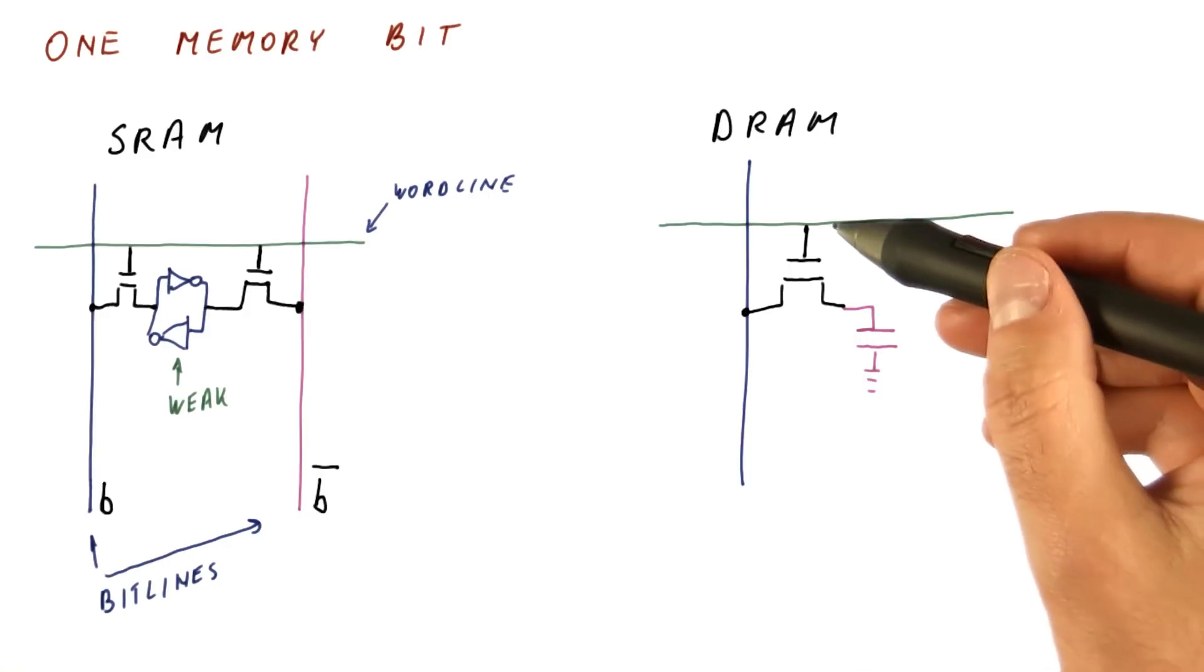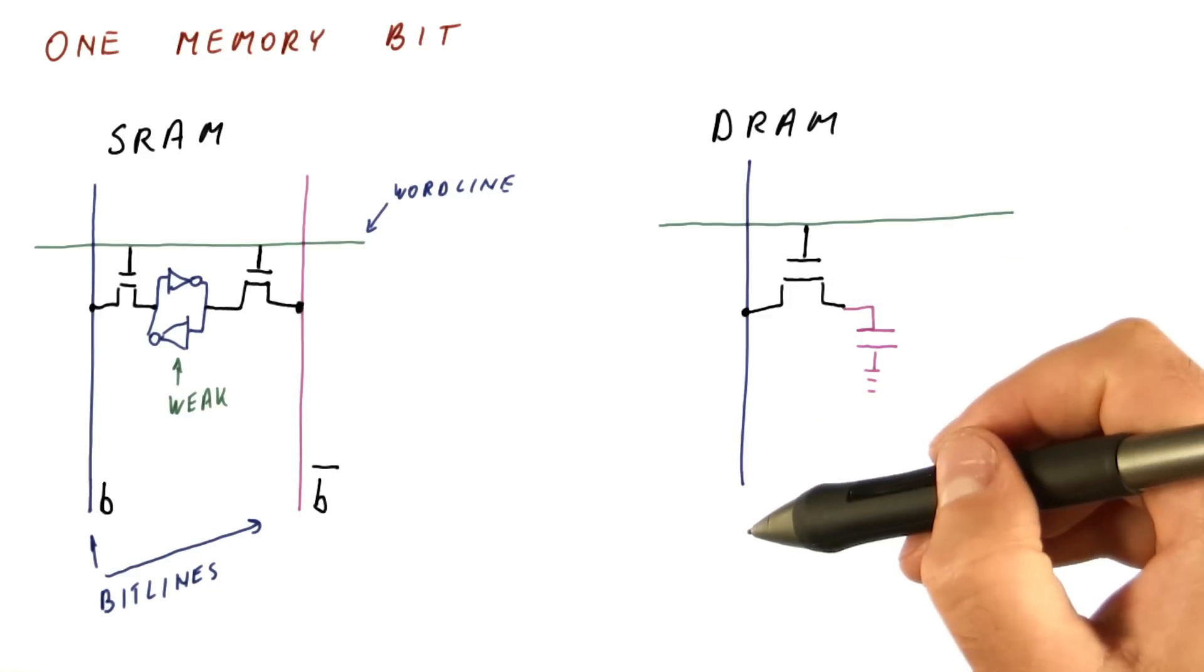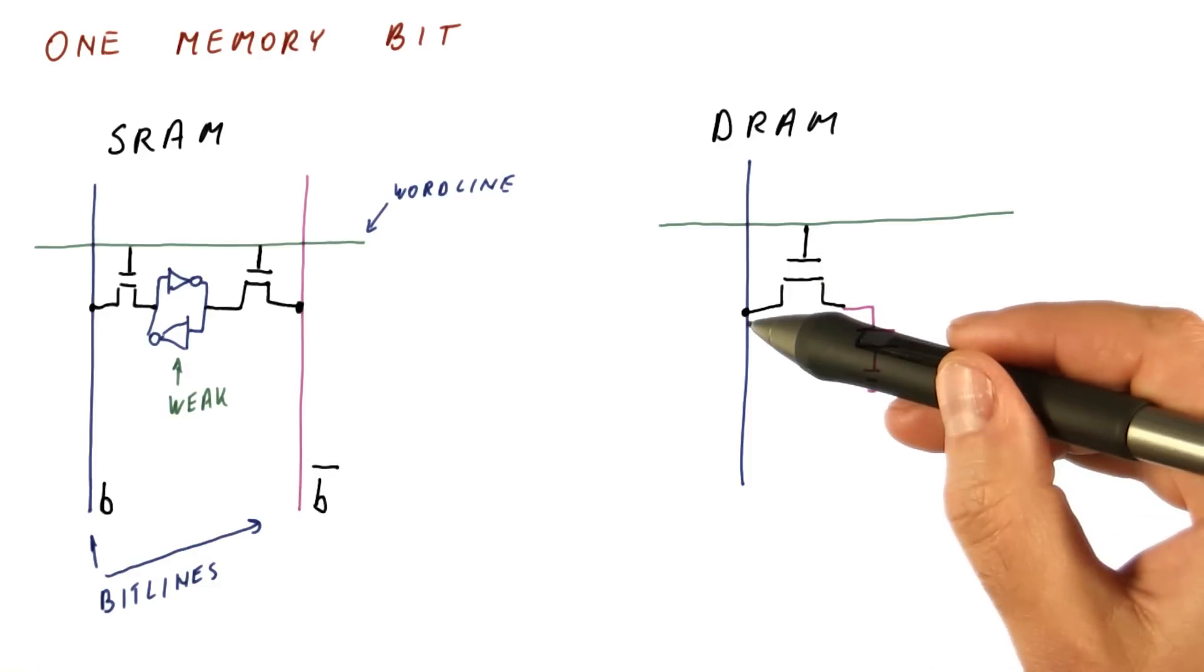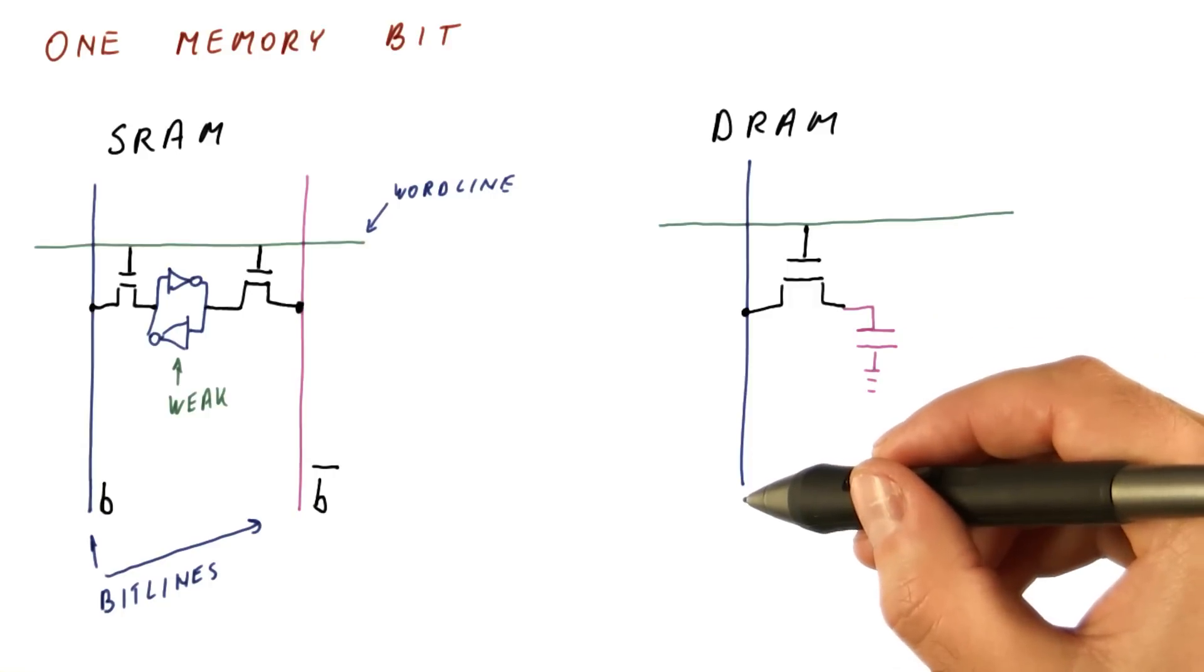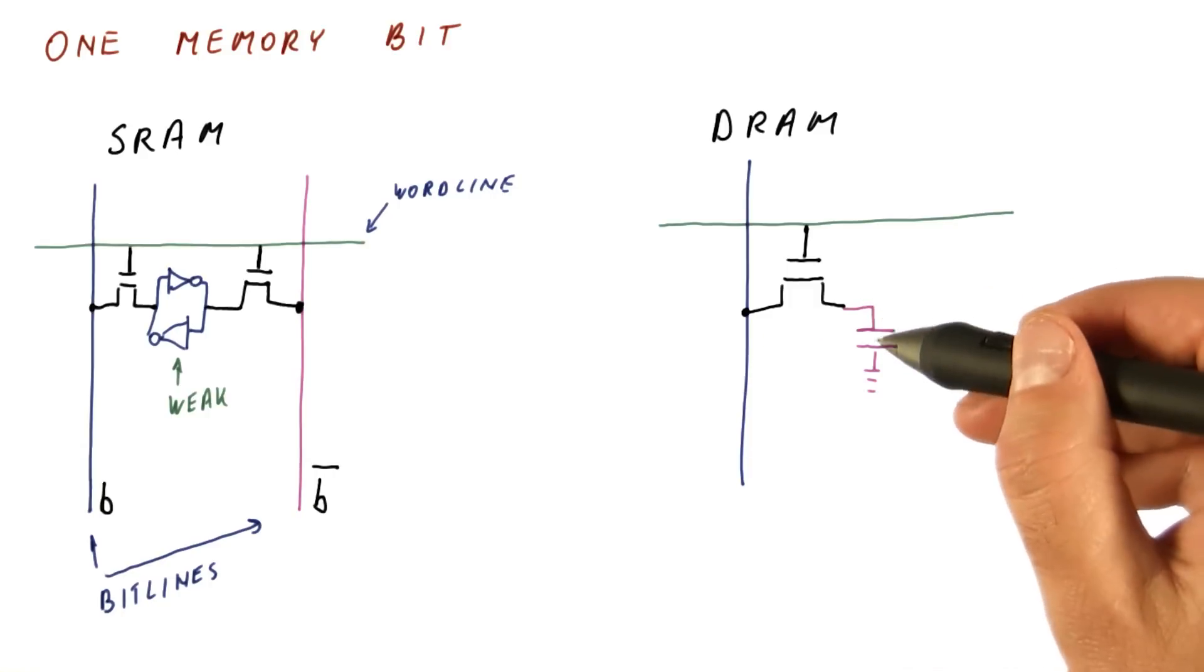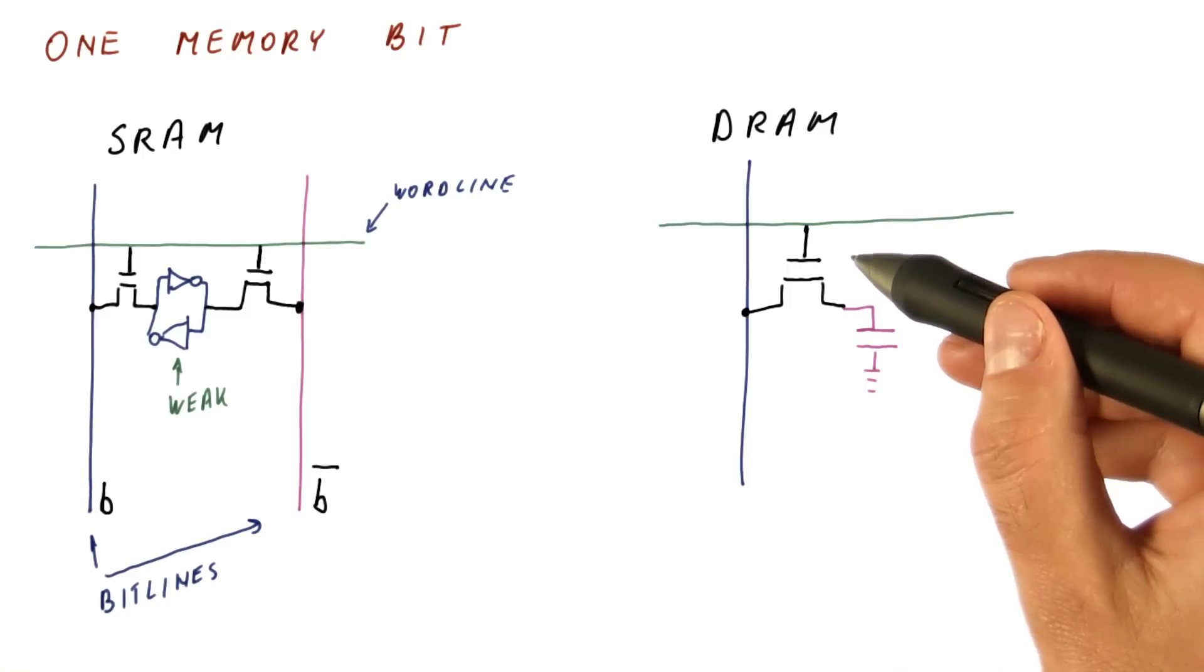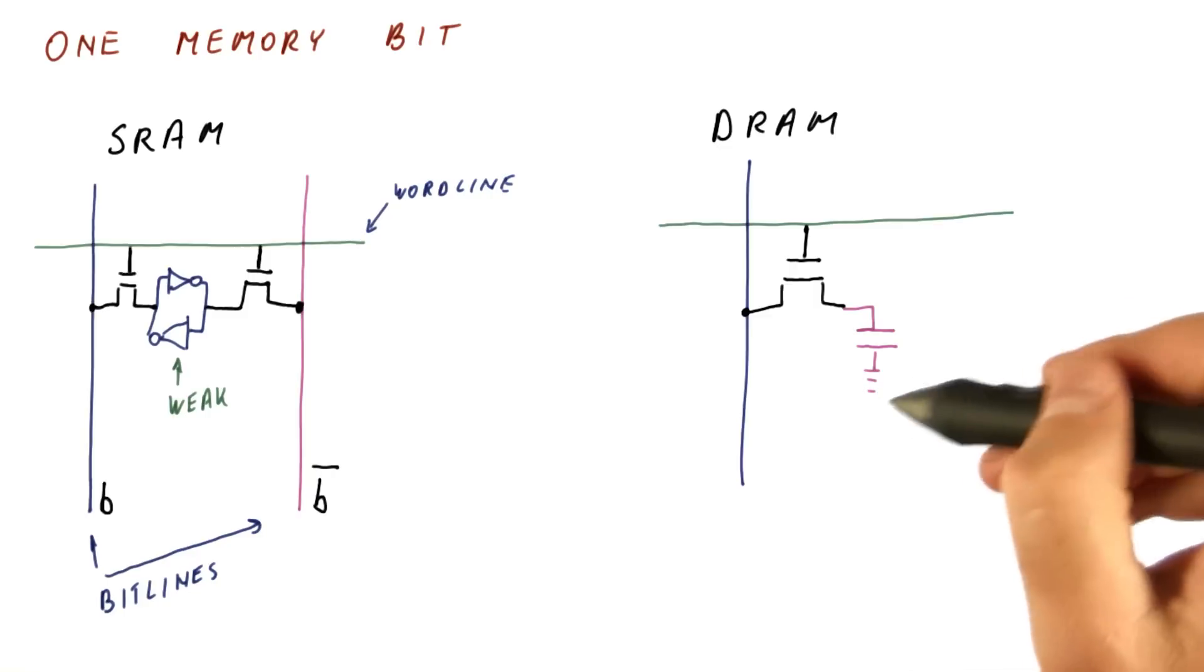So the idea is that to write to this cell, we will activate the word line. We put, let's say, a 1 into the bit line. This transistor connects the capacitor to the bit line. Now what happens is a 1 effectively charges this capacitor. Once we deactivate the word line, the capacitor retains the value that corresponds to a 1.